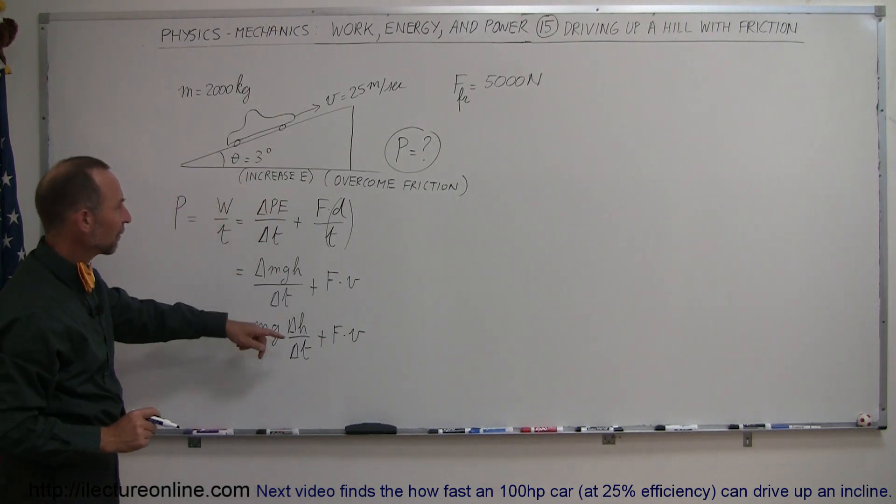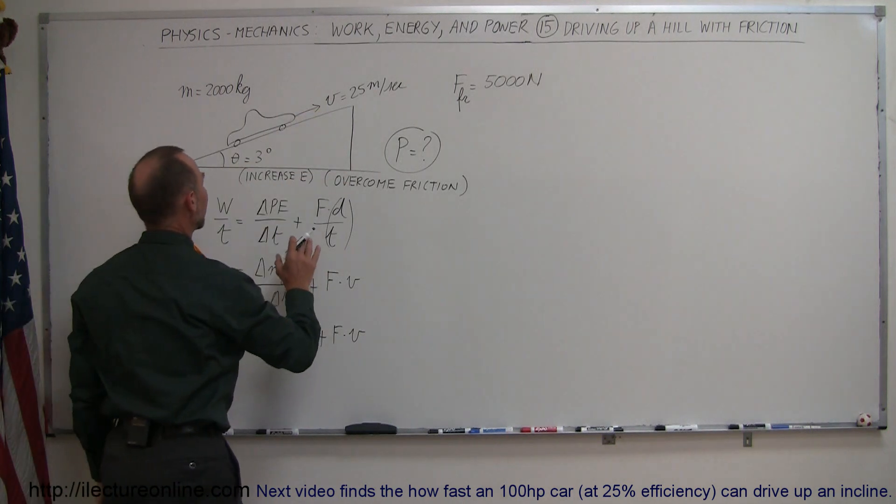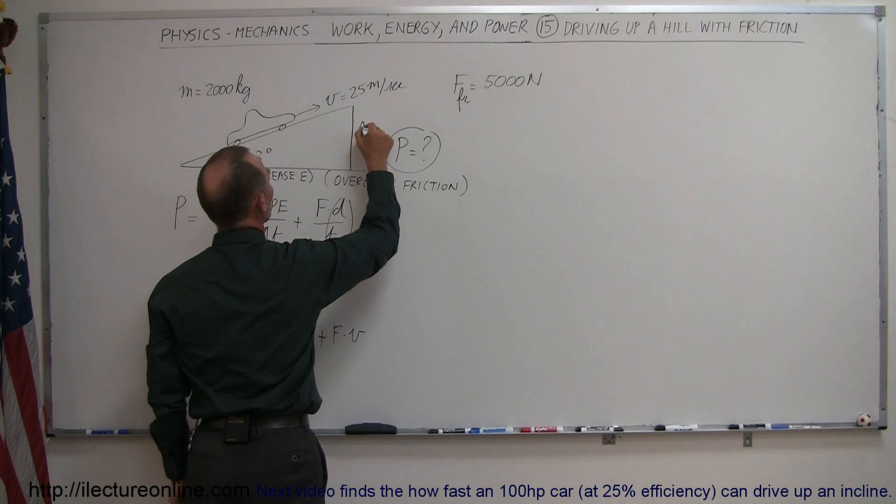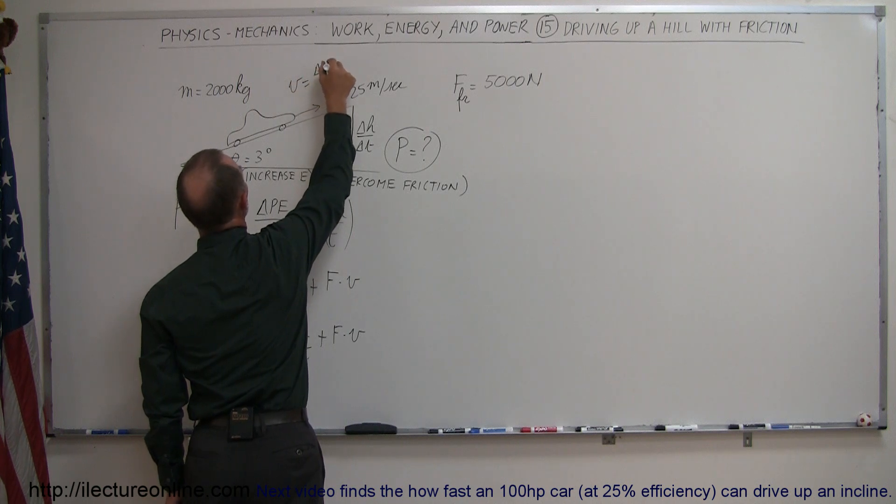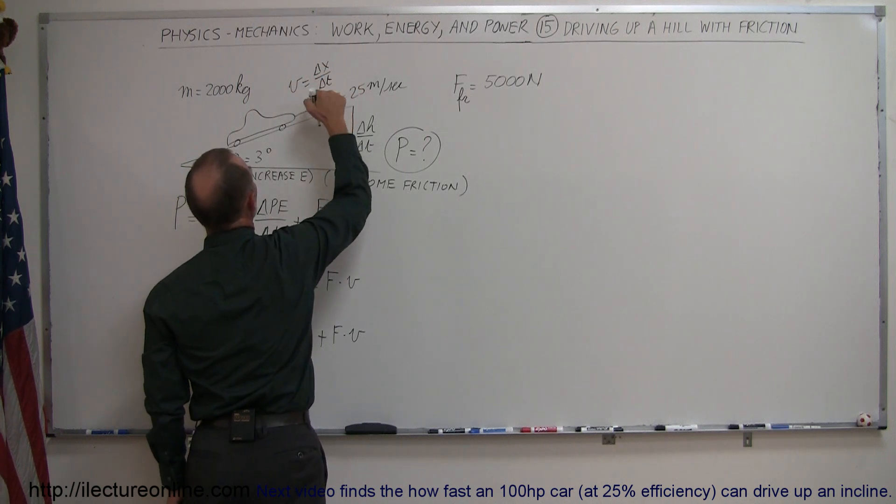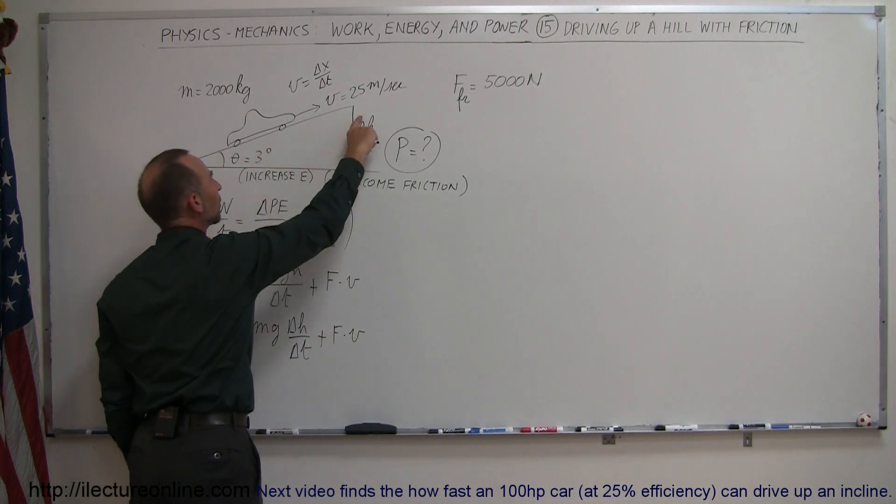So now we still have to figure out how fast the car is gaining height. So that is related through—we can say this is our delta H over delta time. And velocity is equal to the change in X over the change in time. And how these two are related to each other is through the angle. If this is the opposite side, and this is a hypotenuse,